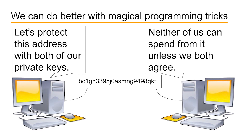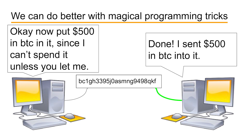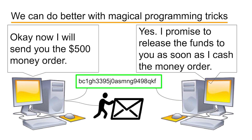We can do something interesting with that. Suppose that Bob sends the $500 in Bitcoins into a 2-of-2 address where he controls one key and you control the other. Now the money is stuck until you both agree that Bob has cashed his money order. Bob can't get his Bitcoins back without your help, and you can't get the Bitcoins out of the address and into your own wallet without Bob's help. So neither of you is at an advantage at this point. Now, let's suppose that once the Bitcoins are in the 2-of-2 address, you send Bob a money order and he cashes it. Now he's happy because he's got his dollars and there's no way he can get the Bitcoins back, so he releases them to you.